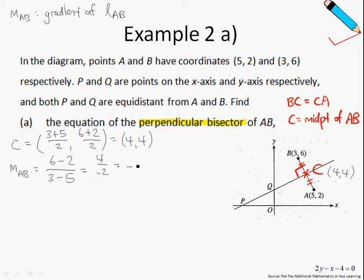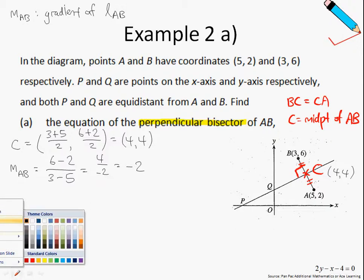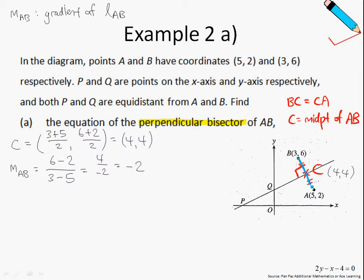Since our line AB is exactly perpendicular to our line QC, from what we have learnt in the previous video, we can safely say that gradient of AB times the gradient of QC is equals to negative 1. This is very, very important. If you have forgotten this, please watch the previous video.